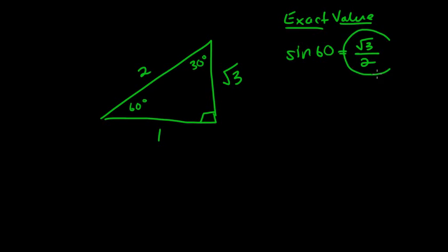The exact value is root 3 over 2, because if you use your calculator and do sine 60, it gives a decimal that is only an approximate answer — like 0.87 to two decimal places. So an exact value or a SIRD gives you the exact value of that number without rounding. You can only give an approximation to one or two decimal places of a SIRD, which is why we leave it in SIRD form when looking for exact values.